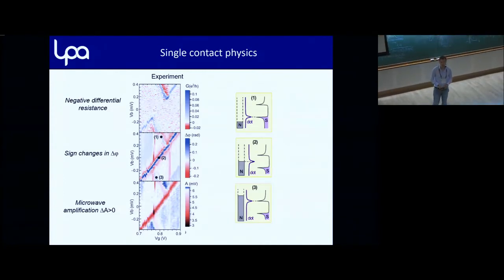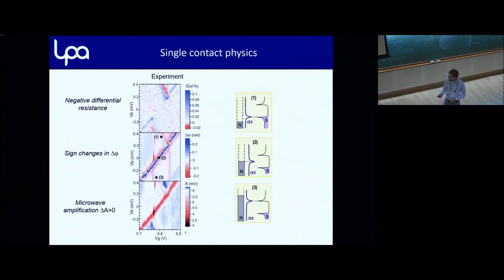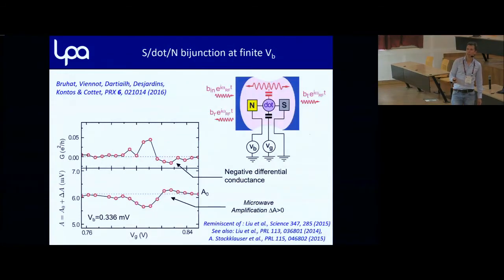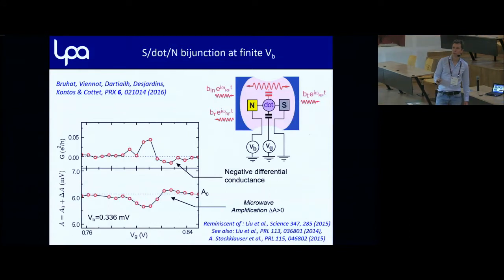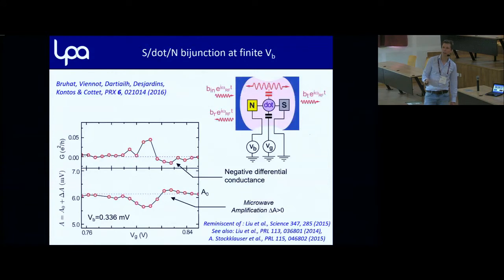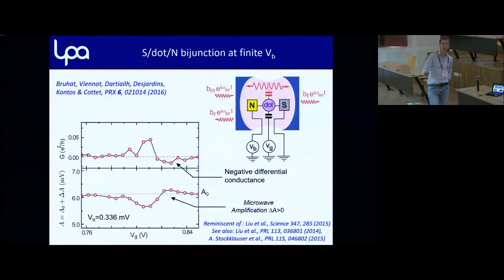This sign change is related to the frequency dependence of the charge susceptibility — which I can no longer call a thermodynamic compressibility since it's a dynamic quantity. You can do even more: driving the system out of equilibrium, you see some increase in conductance as you reach one of the resonances. At constant high bias as a function of gate, the amplitude starts from the bare transmission value.